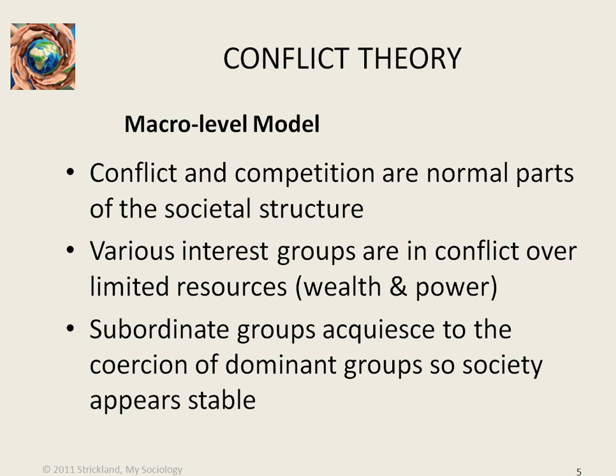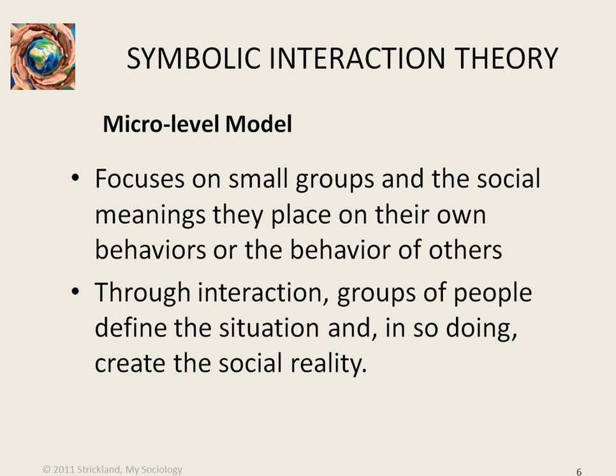Finally, symbolic interaction theory is the only paradigm that uses the micro level model. It is not one theory but a collection of many theories that all use symbolic interaction to explain society. Instead of focusing on the structure of society, it focuses on small groups and the meanings those groups place on their behaviors and the behaviors of others. Small groups define situations in ways they agree upon, and that agreement becomes a social reality for the group — so that someone who violates the agreed-upon rules may be punished, while someone who complies may be rewarded.